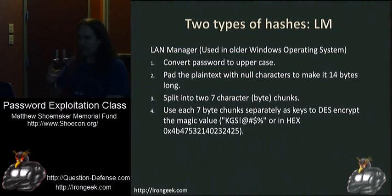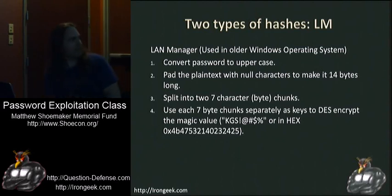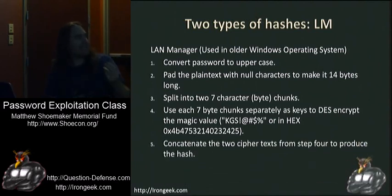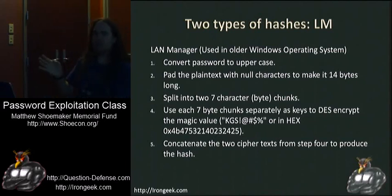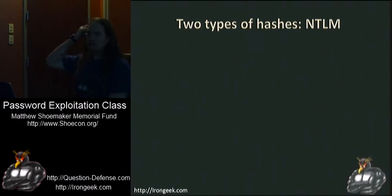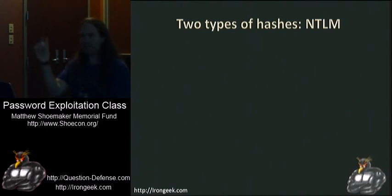These 7-character chunks are then used to DES-encrypt a known value — that known value, if you're curious, is 'KGS!@#$%'. Then it concatenates the two back together and stores it as a hash. Since it's split into two 7-byte chunks, this makes it incredibly easy to crack — you can crack them separately. Luckily, you can turn this off, and in Vista and newer there is no LM hash — there's a hash you'll see in there but it basically represents an empty hash.